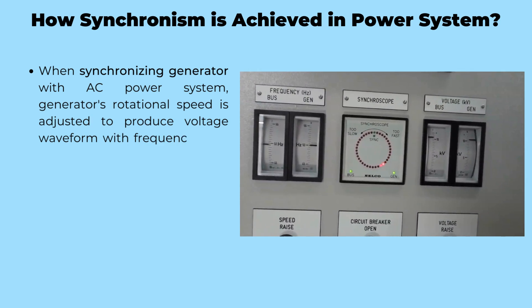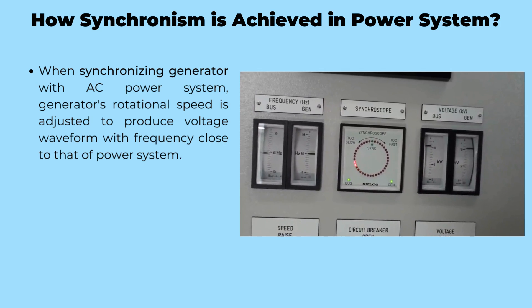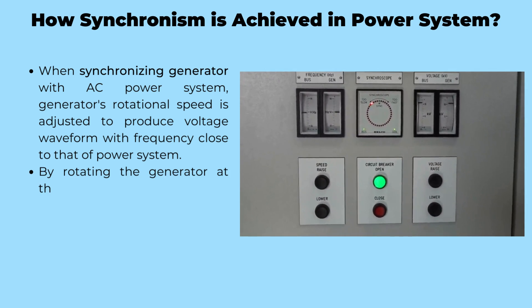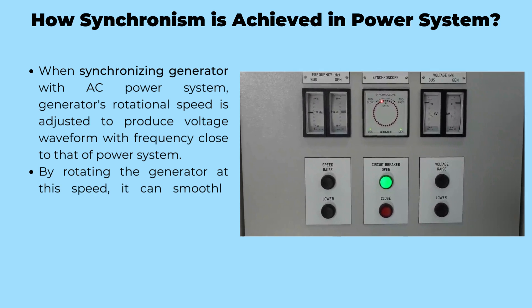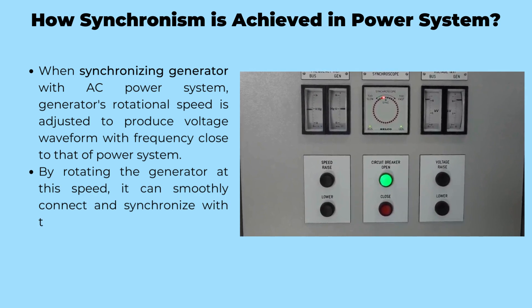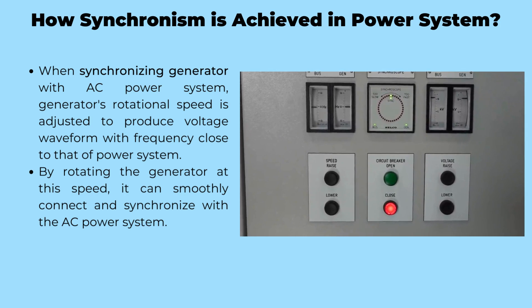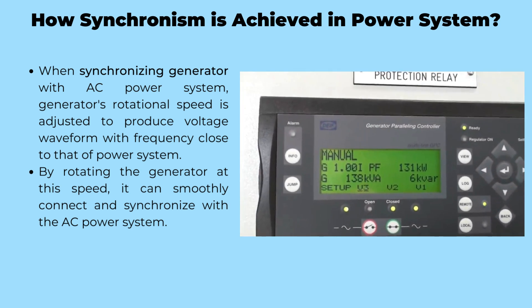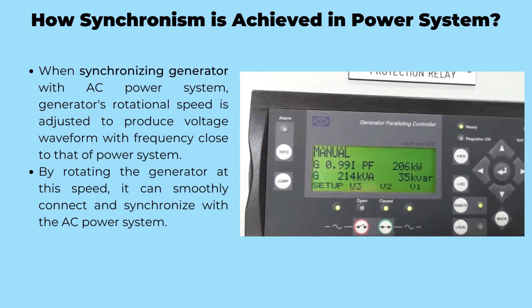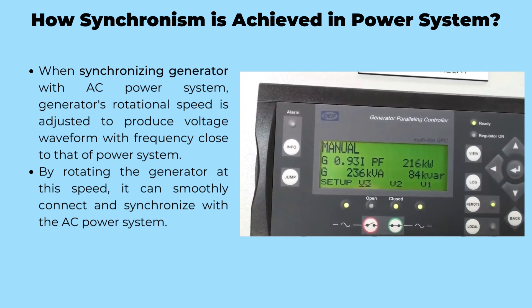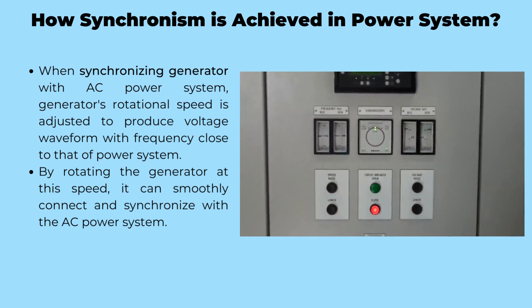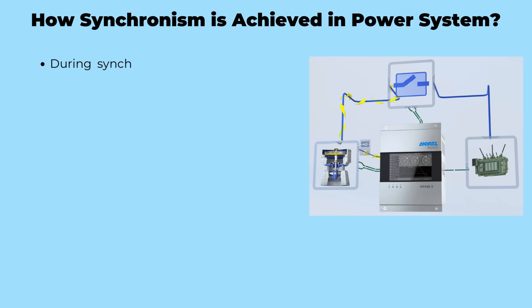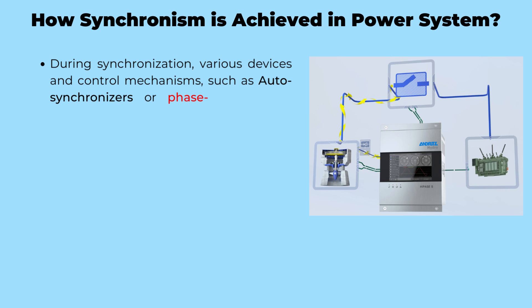This process requires precision and control to achieve smooth and reliable synchronization. Specialized devices called synchronizers come into play, monitoring the voltage and frequency of the generator and comparing them to the corresponding values in the power system. With their guidance, the generator's speed and phase angle can be adjusted gradually, bringing it into perfect harmony with the grid. Once synchronization is achieved, the generator becomes an integral part of the power system. The aim is to align the frequency, phase, and voltage of a generator with the existing power system using specialized devices such as autosynchronizers or phase-locked loops.